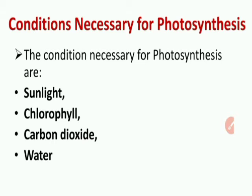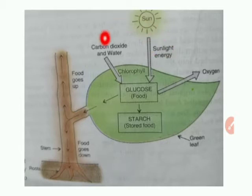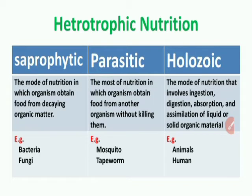Looking at the figure: sunlight energy, carbon dioxide, and water in the presence of chlorophyll combine to form glucose. Now, heterotrophic nutrition — organisms that cannot prepare their own food depend on other animals. Heterotrophic nutrition has three types: saprophytic, parasitic, and holozoic nutrition.